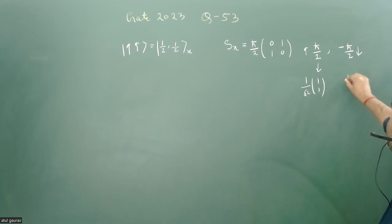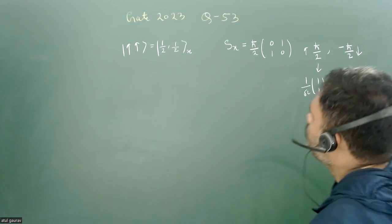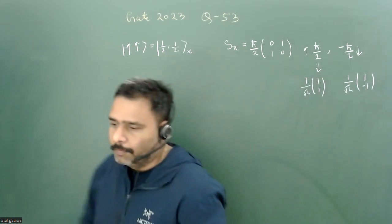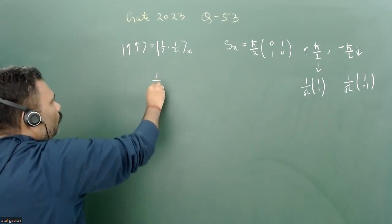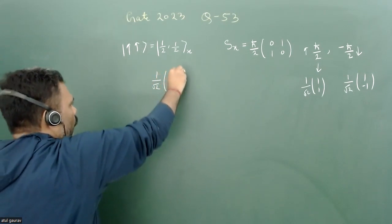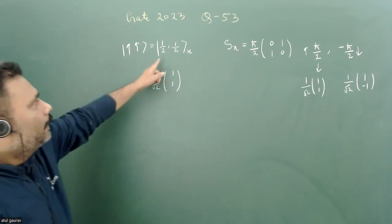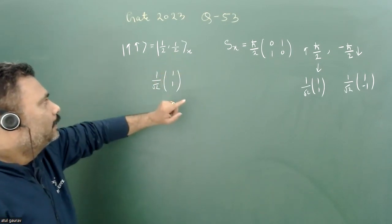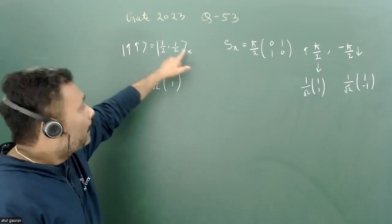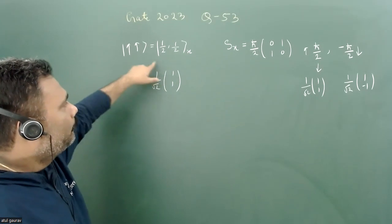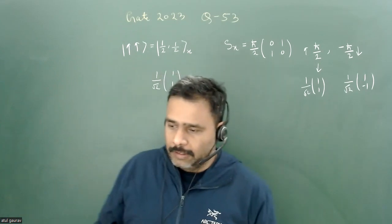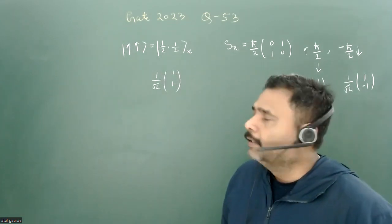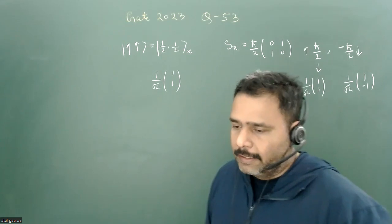The eigenstate corresponding to +ℏ/2 is (1/√2)[1,1] and for -ℏ/2 it is (1/√2)[1,-1]. In matrix form, our given state is exactly (1/√2)[1,1], which is the eigenstate of Sx with eigenvalue +ℏ/2.